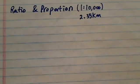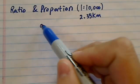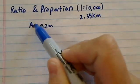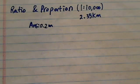The answer to this question, in a scale of 1 to 10,000, how long is 2.35 km in the scale? The answer is roughly 0.2 meters. Let me show you how to get there.